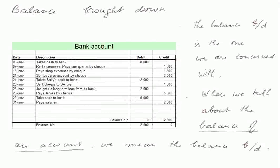Then we write the same number on the other side, which is therefore the difference between all debits minus all credits. That one is called the balance brought down. When we talk about the balance of an account, we mean the balance brought down. The balance carried down we shall forget from now on.